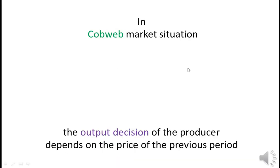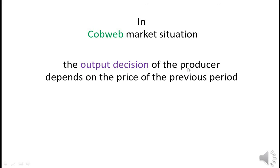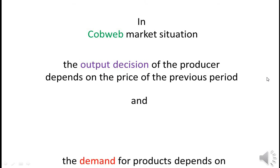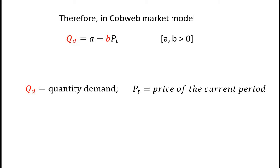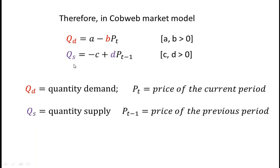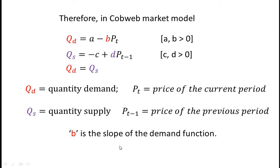In a cobweb type market situation, the output decision of the producer depends on the price of the previous period, and the demand for products depends on the price of the current period. The cobweb market model is stated as: quantity demanded qd equals a minus b·pt, where pt is the price of the current period; and quantity supplied qs equals minus c plus d·pt−1, where pt−1 is the price of the previous period. Here, b is the slope of the demand curve and d is the slope of the supply curve.